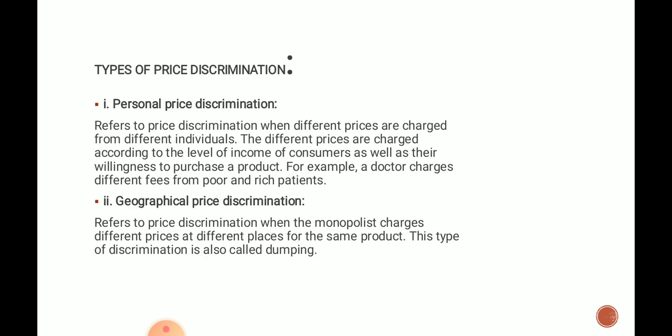The next type is geographical price discrimination. It refers to price discrimination when a monopolist charges different prices at different places for the same product. This happens when a monopolist charges different prices for the same product in different geographical locations. For example, a multinational company charges different prices in the home country versus the foreign market. This type of price discrimination is also called dumping. The price may be less in the home country and high in a foreign country, or vice versa.